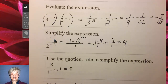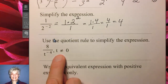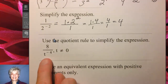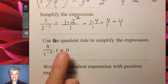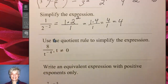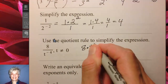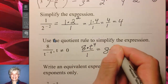Here's a problem of the kind you'll see very often. Don't be concerned about t not equaling 0 — that's just a technicality saying you can never have a 0 in the denominator of a fraction. This problem works like the last one. You'll have 8 times t to the positive 4 over 1, which is 8t to the positive 4.